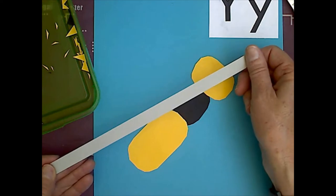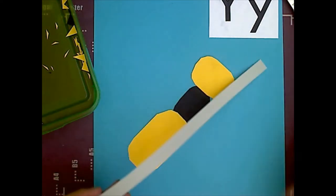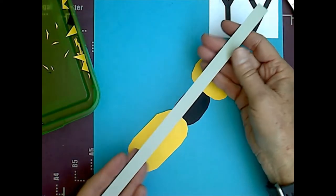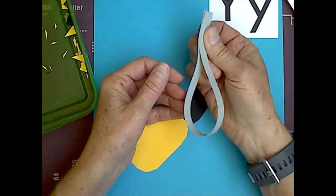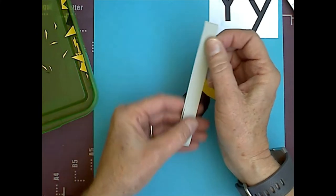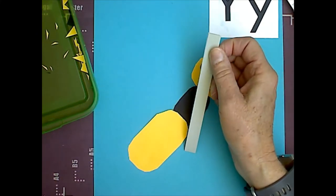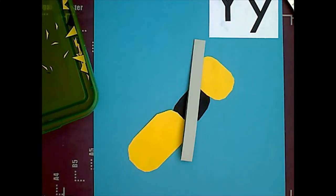Okay, now, the next one we're going to do is this long gray one, which are his wings. So, we are going to fold this in half, like so.